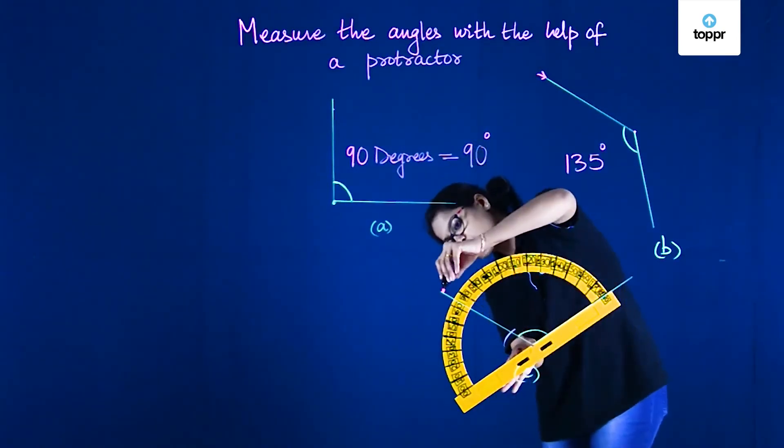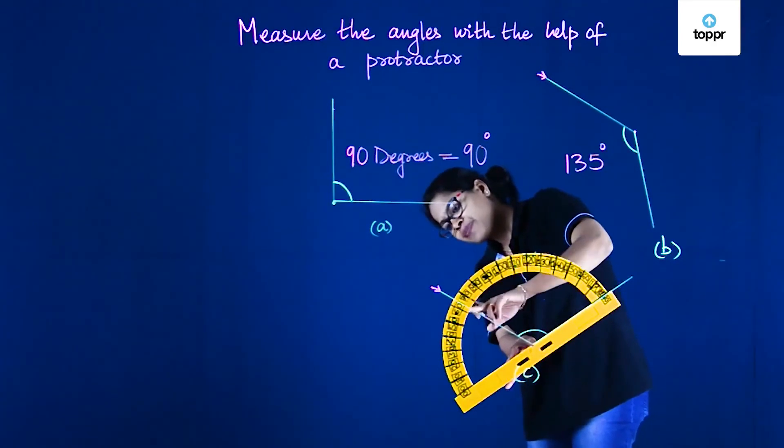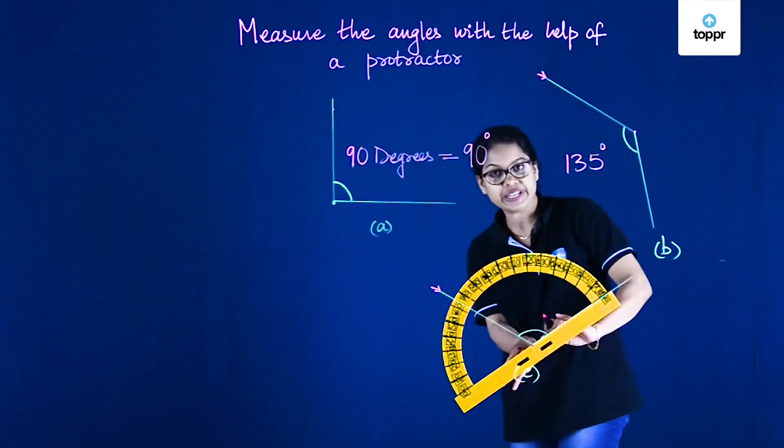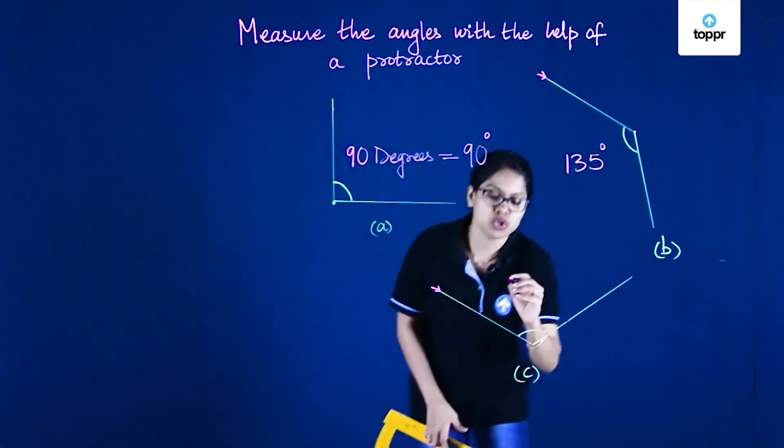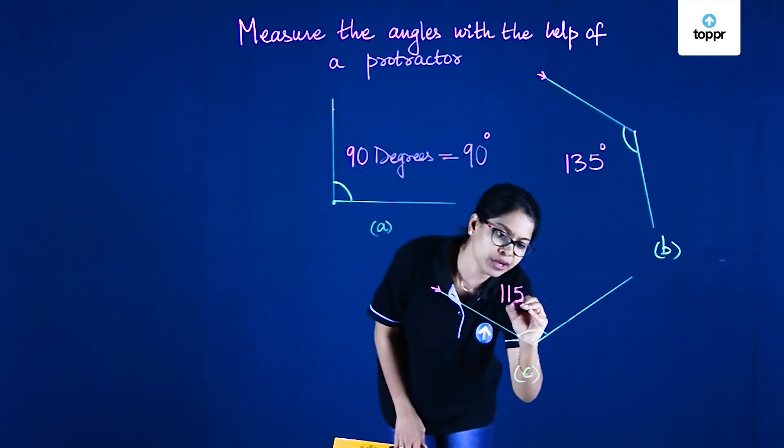Following the zero mark, this is where it ends. This point on the protractor reads 115. So we write 115 degrees.